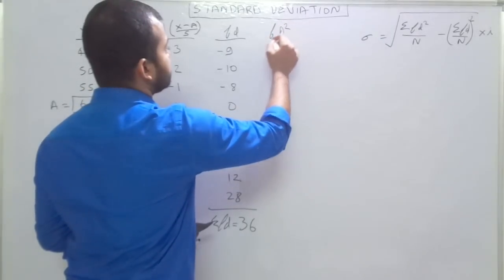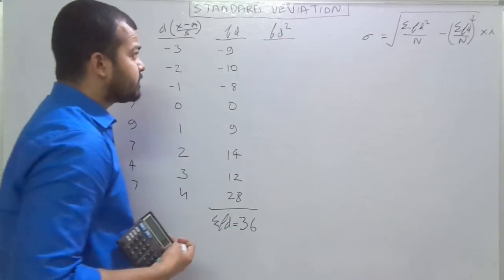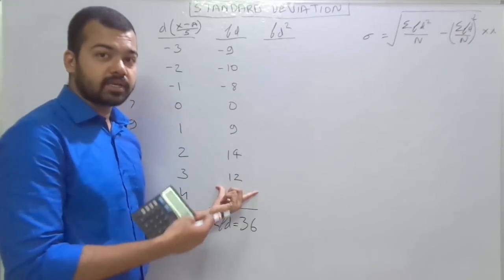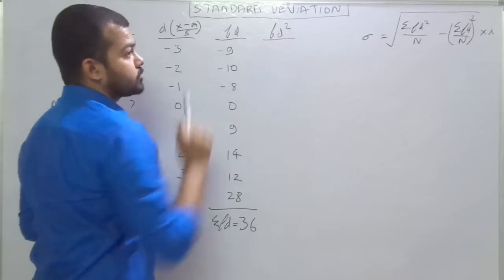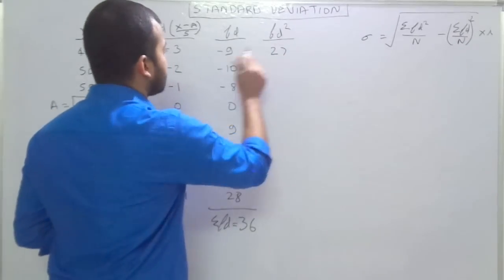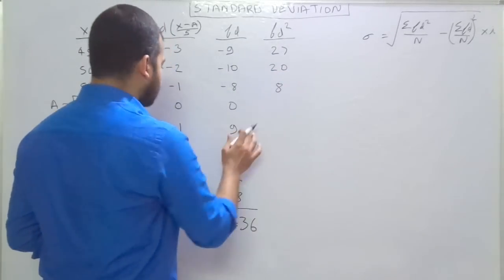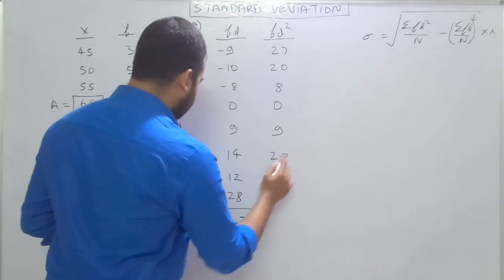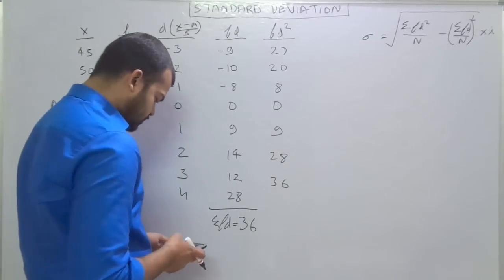Now we have to calculate FD². One thing must be noted: FD² doesn't mean you square these values — some students are making repeated mistakes here. FD² means FD multiplied by D, so D becomes D². So: 9 into 3 is 27. Minus times minus becomes plus, so 10 into 2 is 20. 8 into 1 is 8. 9 into 1 is 9. 7 into 0 is 0. 14 into 2 is 28. 12 into 3 is 36. And 28 into 4 is 112.